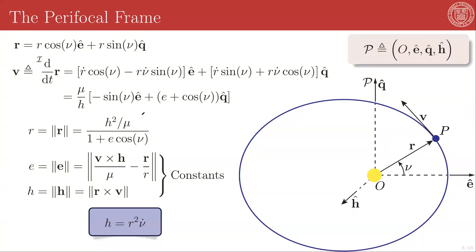In developing the two-body equations of motion and finding their analytical solution for the orbital radius magnitude, we found that all of the motion of one body with respect to the other lies in a single plane that is orthogonal to the specific angular momentum direction, h-hat, and h-hat is itself a conserved quantity in the system.